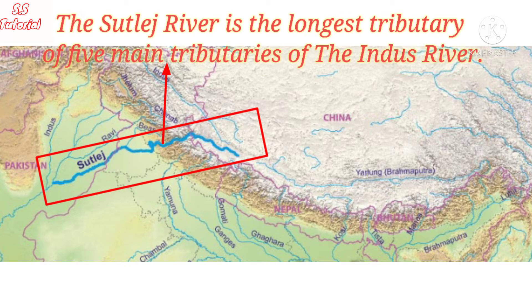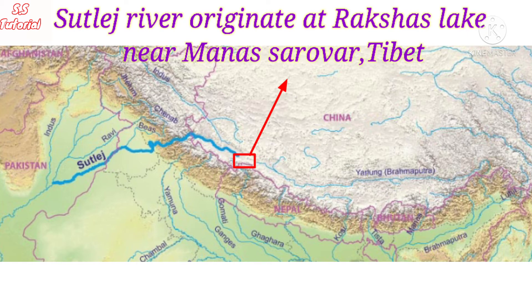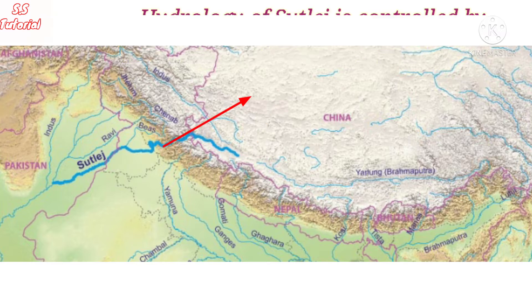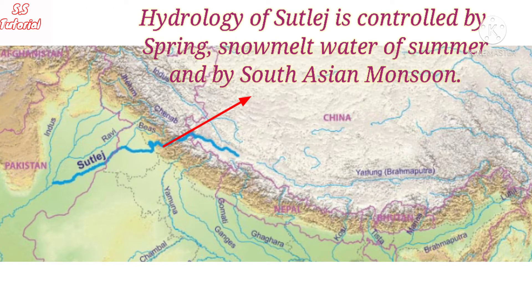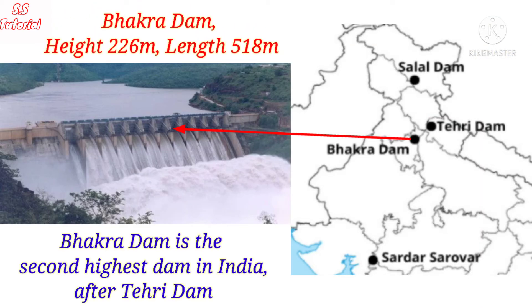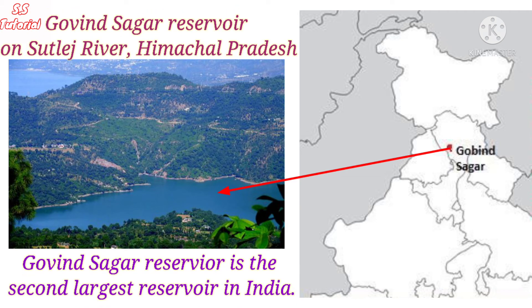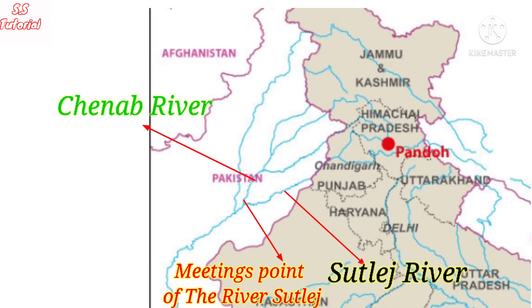Now we will know about the Satlej river. The Satlej river is the longest of the five main tributaries of the Indus river, about 1,600 kilometers long. The Satlej originates from the Rakshas lake, which is connected with the Mansarovar lake by a stream in Tibet. It entered the Indian subcontinent at Shipki Pass in Himachal Pradesh, joining with the Spiti river before entering Punjab. The Bhakra Dam, built on the Satlej, is 226 meters high and 518 meters long — the second highest dam in India after Tehri Dam. Its reservoir, Gobind Sagar, is the second largest reservoir in India. The Satlej finally joins with the Chenab river.